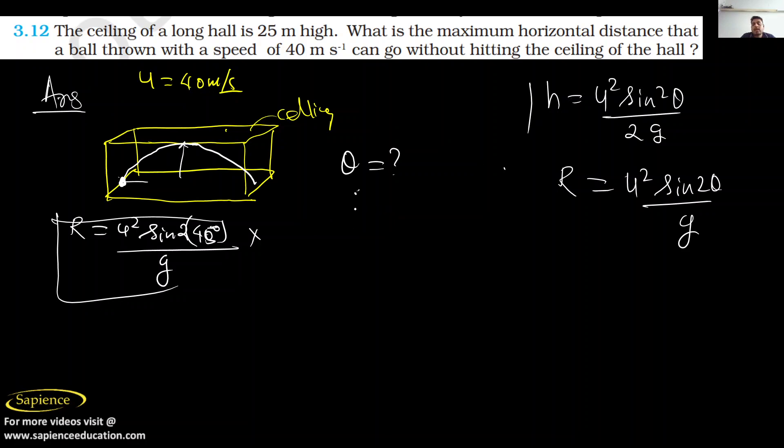How will you find θ? By using the formula h equals u squared sine squared θ divided by 2g. Here h is 25 meters, u squared is 40 squared, sine squared θ divided by 2 into 9.8. When you solve this, you will get θ equals 33.6 degrees.